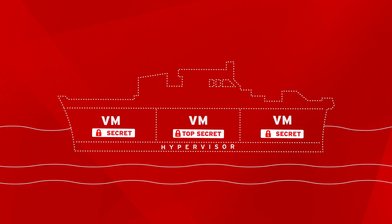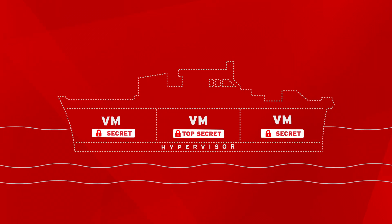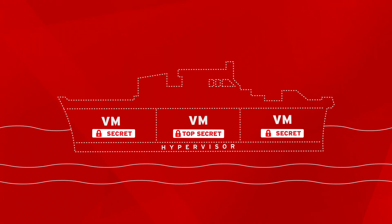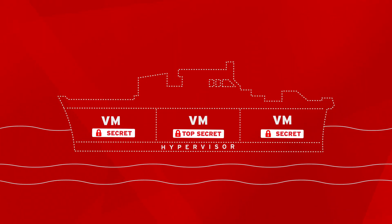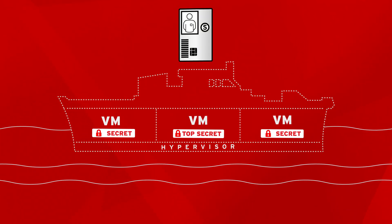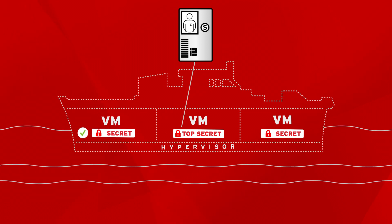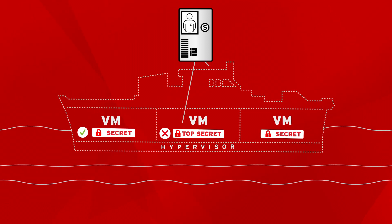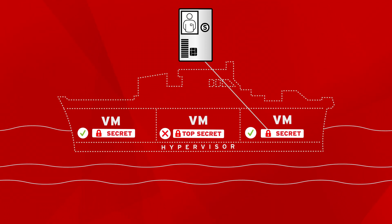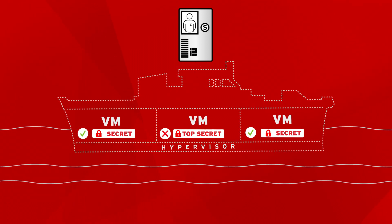SVIRT, the application of SELinux to virtualization, provides a native labeling system, isolating virtual machines from each other while simultaneously defining roles and privileges.